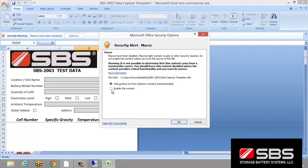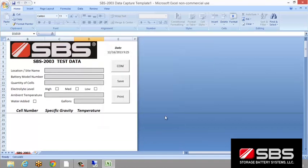To transfer the data from the SBS 2003 to your computer, simply open the SBS 2003 data capture template on the supplied CD. A copy can be saved on the desktop or in the folder you wish to store all of your data. Reference the manual to learn how to properly do both of these.